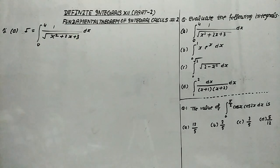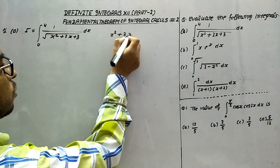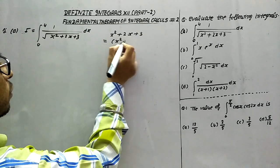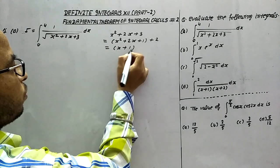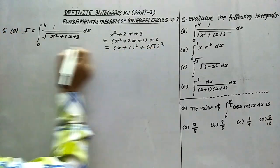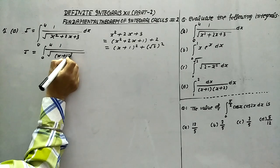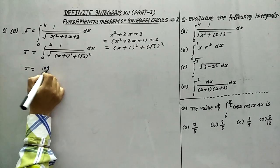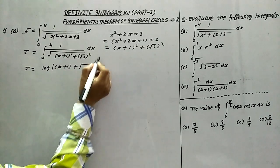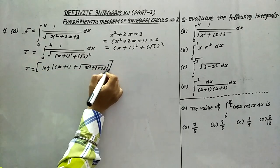We do the solution the same way as in indefinite integrals, but at last we put the upper limit and lower limit. Now, x squared plus 2x plus 3 — completing the square — becomes x squared plus 2x plus 1, plus 2. This means it becomes (x+1)² plus (√2)². So I equals integration from 0 to 4 of 1 upon under root of (x+1)² plus (√2)². Applying the formula, this is log of (x+1) plus under root of x² plus 2x plus 3, with limit 0 to 4.